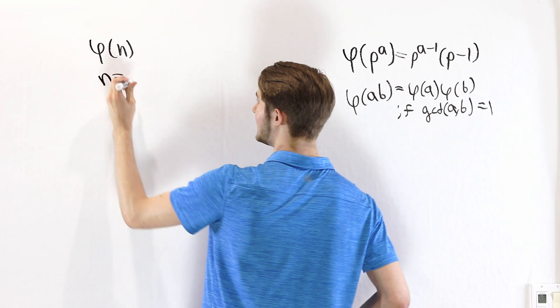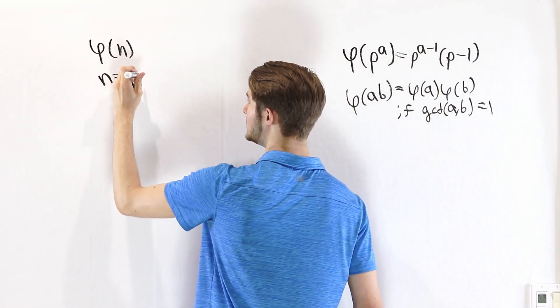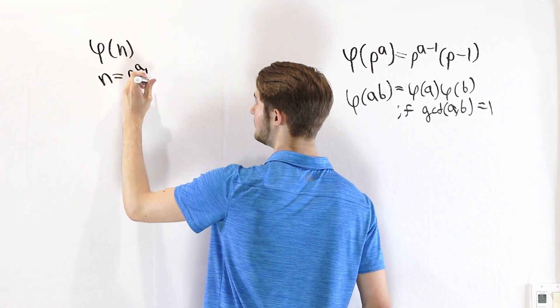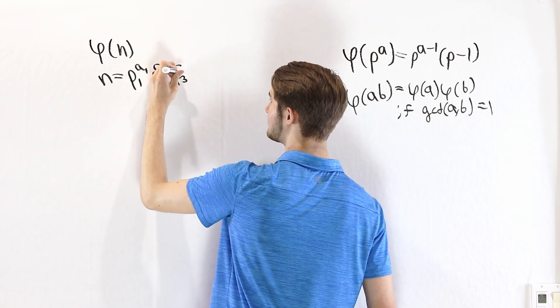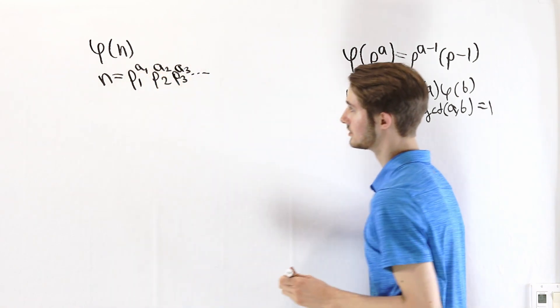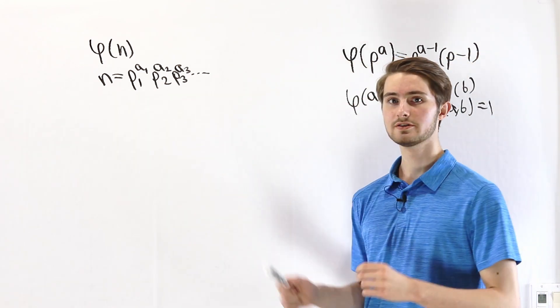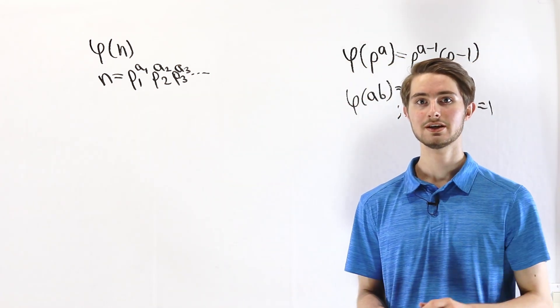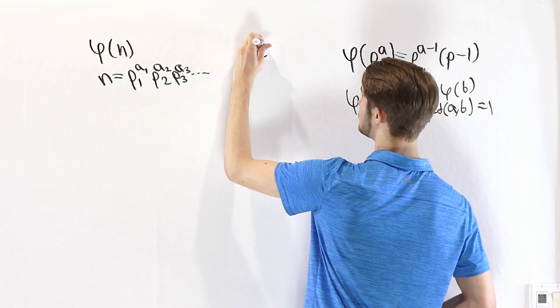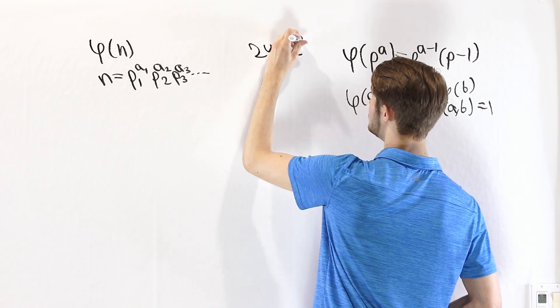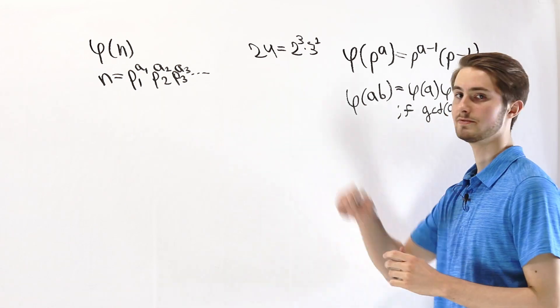In particular, we know that n has to have some prime factorization. And it's going to look like p1 to the power of a1 times p2 to the power of a2 times p3 to the power of a3 and so on. And what this is saying is we're looking at some number of distinct prime numbers and each of them is raised to a particular power. For example, 24 is equal to 2 cubed times 3 to the first power. So that is the prime factorization.